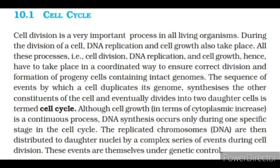Cell division is a very important process in all living organisms. During the division of a cell, DNA replication and cell growth also take place. All these processes — cell division, DNA replication, and cell growth — have to take place in a coordinated way to ensure correct division and formation of progeny cells containing intact genomes. The sequence of events by which a cell duplicates its genome, synthesizes the other constituents of the cell and eventually divides into two daughter cells is termed cell cycle. Although cell growth, in terms of cytoplasmic increase, is a continuous process, DNA synthesis occurs only during one specific stage in the cell cycle. The replicated chromosomes are then distributed to daughter nuclei by a complex series of events during cell division. These events are themselves under genetic control.